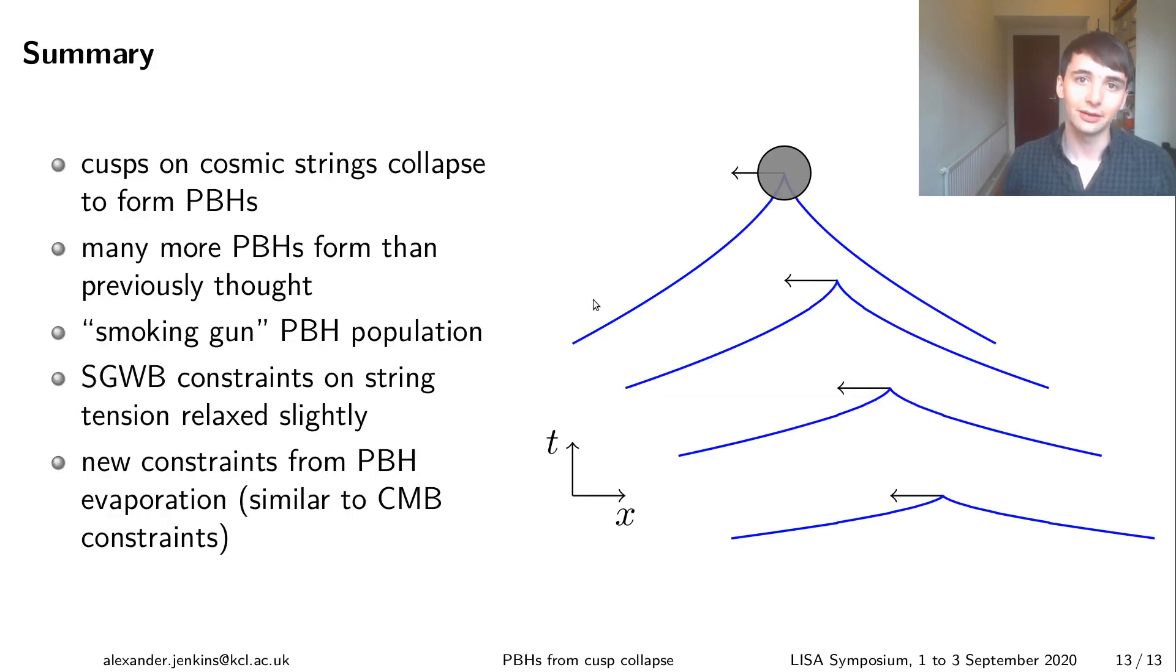Okay so that's pretty much everything I wanted to say. So just to summarize we've shown that cusps on cosmic strings can collapse to form primordial black holes and this means that there are many more primordial black holes that are formed from cosmic strings than has been recognized before. These black holes are ultra relativistic and highly spinning which makes them an interesting unique population and this has some interesting implications for gravitational wave constraints and also for the evaporation of these primordial black holes. So thank you very much for listening.